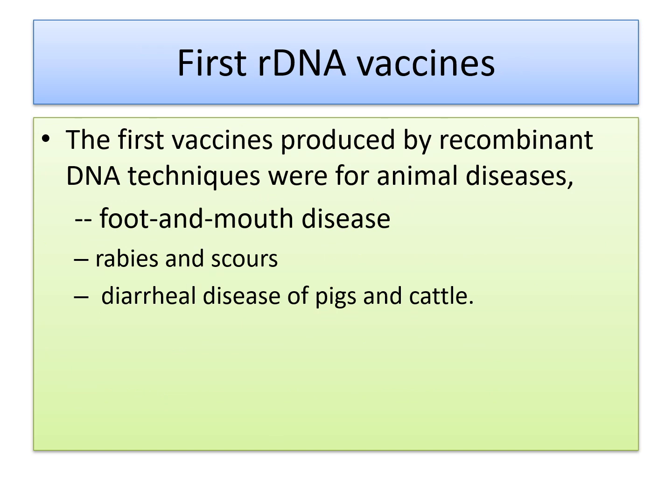DNA vaccines — the first vaccines produced by recombinant DNA techniques were mainly for animal diseases: foot and mouth disease, rabies, scours, and diarrheal disease of pigs and cattle. Vaccine production for these diseases was among the first recombinant DNA vaccines developed.